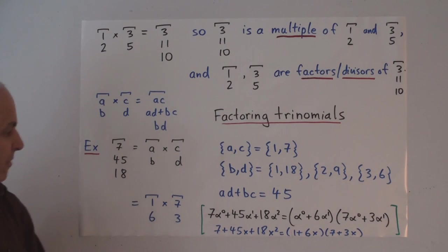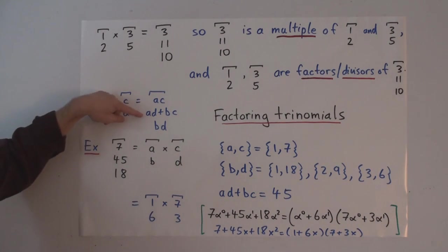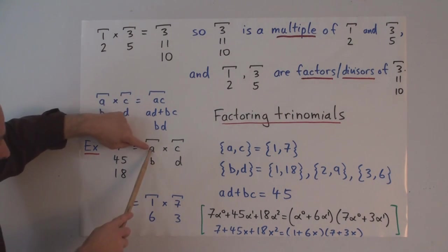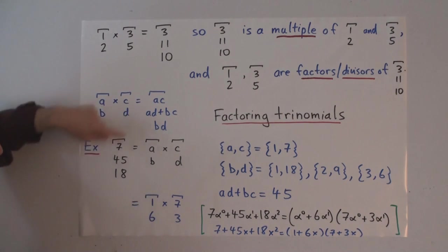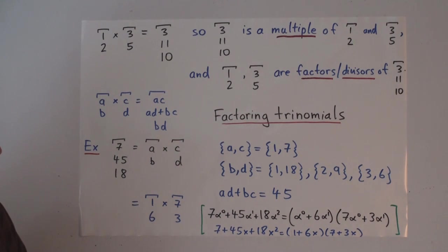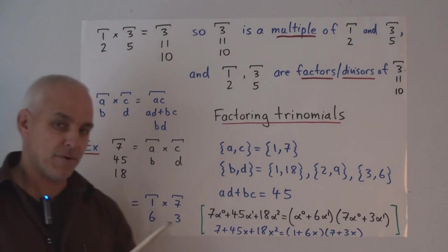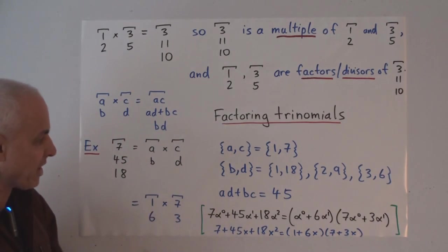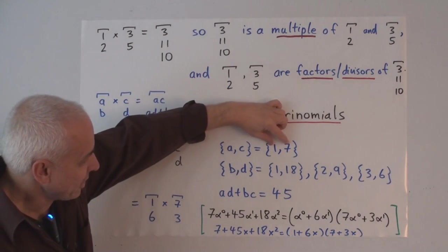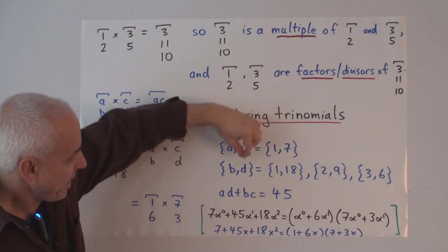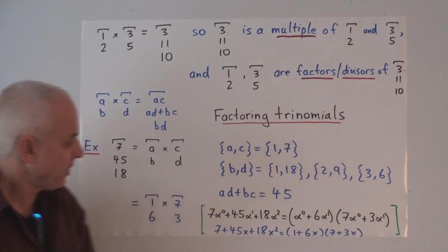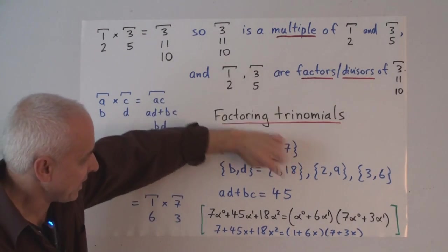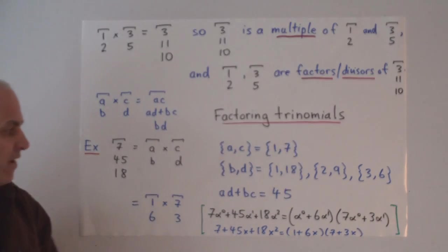And there's one more piece of information. The middle term, AD plus BC, this times this plus this times this has got to equal 45. And now it's a standard kind of little game that one plays, looking at all the possibilities. How can we choose these two numbers? And how can we choose a pair here so that the A times the D plus the B times the C should equal 45?